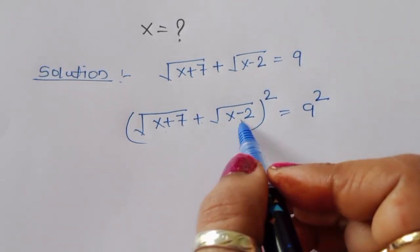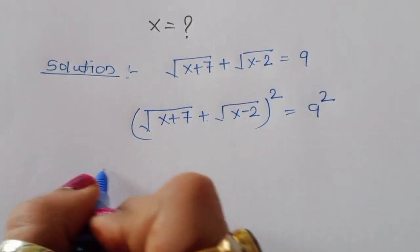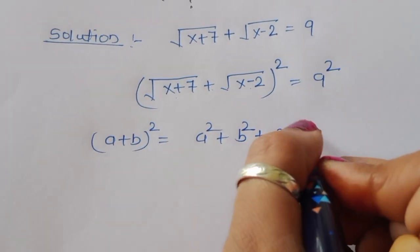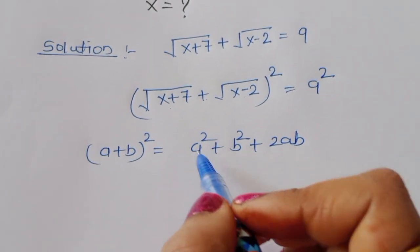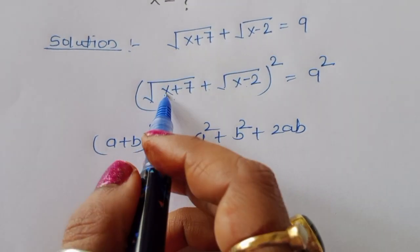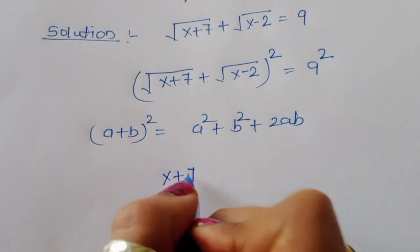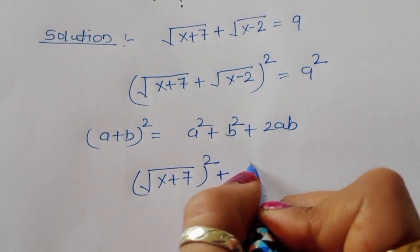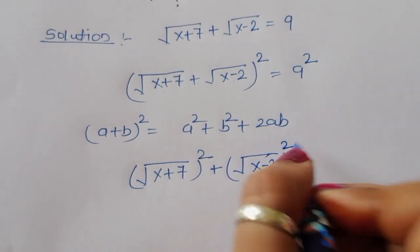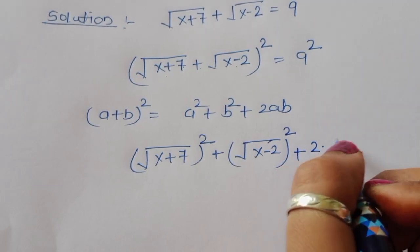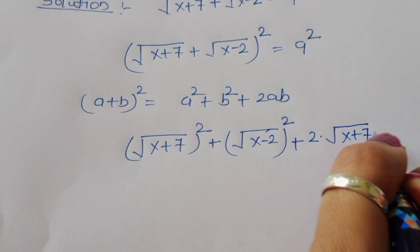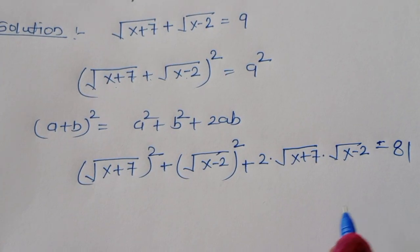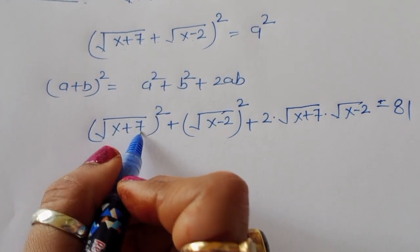Now this is the formula of (a+b)². The value of (a+b)² = a² + b² + 2ab. Here a = √(x+7) and b = √(x-2). So we write: [√(x+7)]² + [√(x-2)]² + 2·√(x+7)·√(x-2) = 9² = 81.